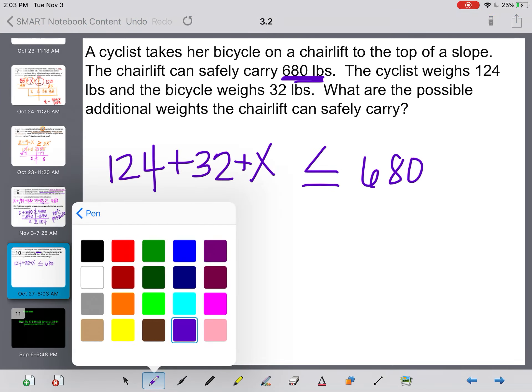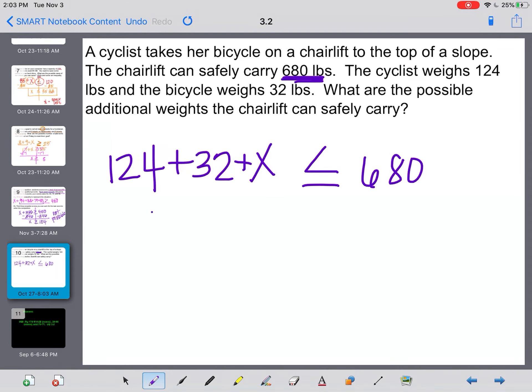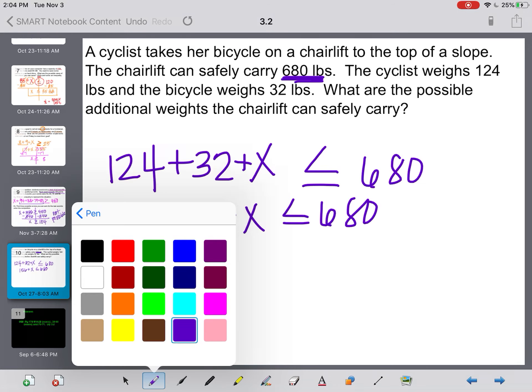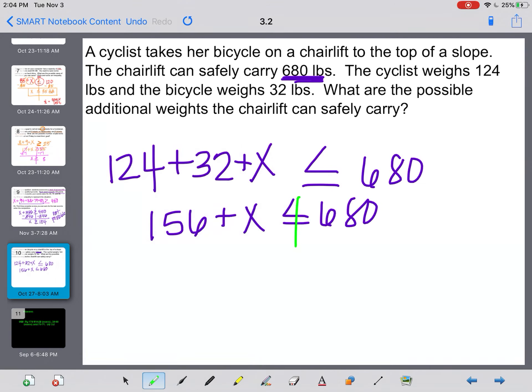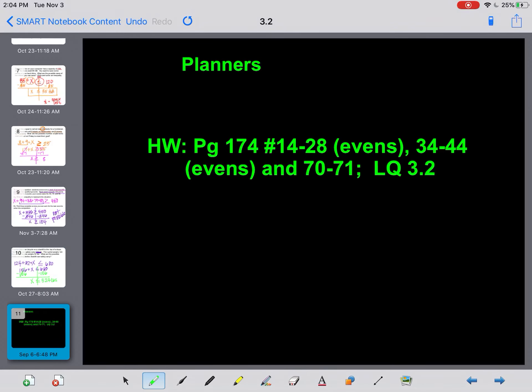Alright. So we know that it could weigh equal to 680 and be safe. Can it be greater than? Nope. But it can be less than. Alright. So if I simplify this, 124 plus 32 is 156 plus x is less than or equal to 680. That's your inequality. Then we need to solve it. So we are going to subtract 156 from both sides. And that tells me that my extra weight that I could carry would be less than or equal to 524 pounds.